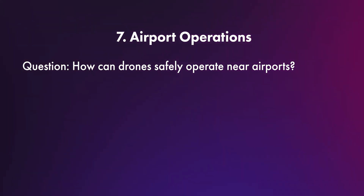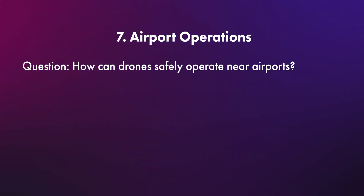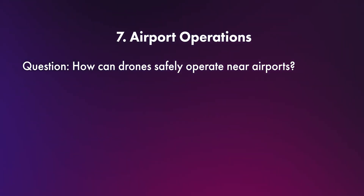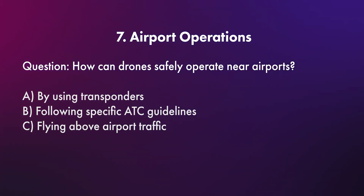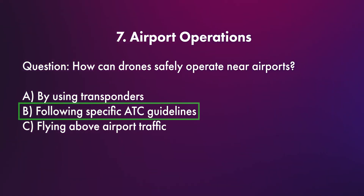Question number seven has to do with airport operations. How can drones safely operate near airports — A) use transponders, B) follow specific air traffic control guidelines, or C) fly above airport traffic? The FAA is very focused on knowing what to do if you're contracted to fly near an airport. The correct answer is B, following specific ATC guidelines.